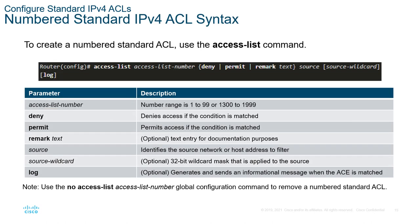What is the syntax? From a global configuration point, you type in 'access-list' followed by a number. If it's a standard ACL, the number will be between 1 and 99. If it's extended, it will be between 100 and 199. Next is the action: are we going to do a permit or deny, or are we doing a remark? A remark is the way that we comment these. Because this is a standard ACL, we only need a source address, so we'll have a source and a source wildcard.